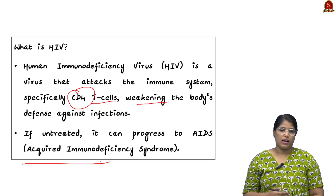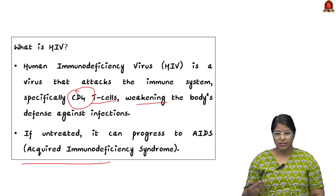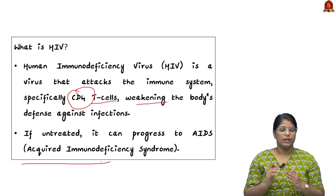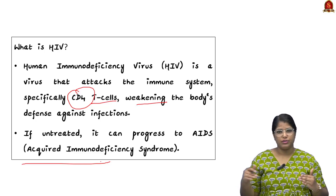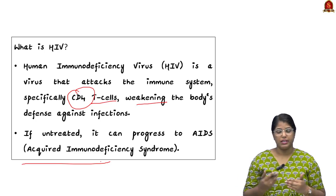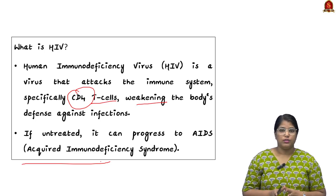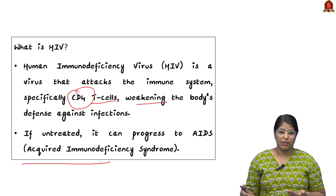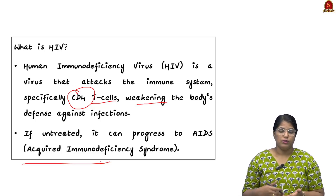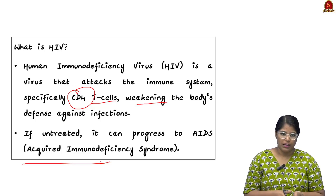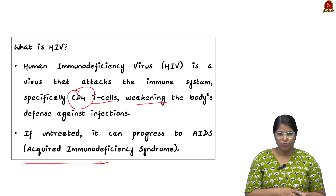Acquired Immunodeficiency Syndrome — 'syndrome' itself means it includes a lot of subsidiary infections and diseases. So our body will be prone to subsidiary diseases like tuberculosis and liver damage. Those kinds of things will also be there when it comes to AIDS.